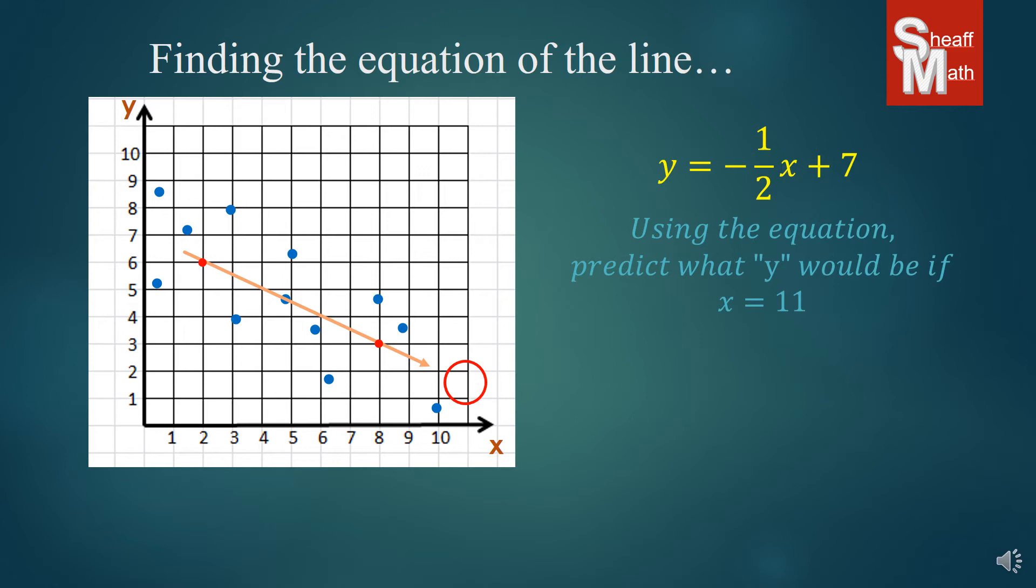If x equals 11, we're going to put 11 in for x. We simplify: negative 1 half times 11 is negative 5.5. We add 7 to that, and we get y equals 1.5. And if you look in the red circle, you can see that at 11, that line is probably going to go through 1.5. So that is the exact way to find it.